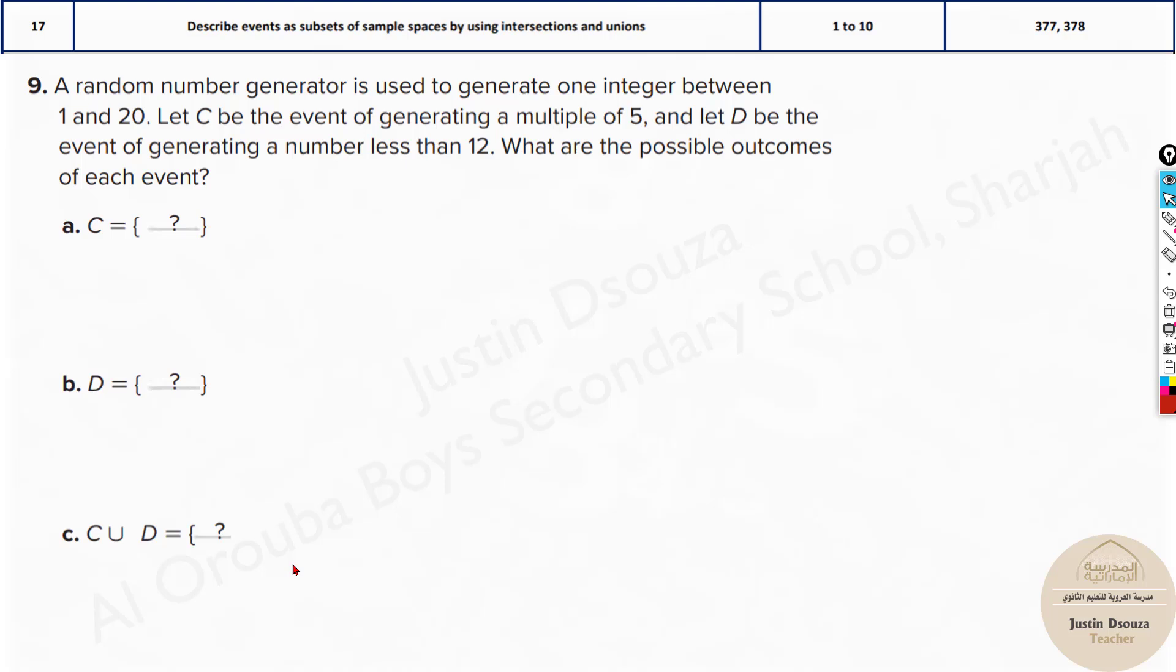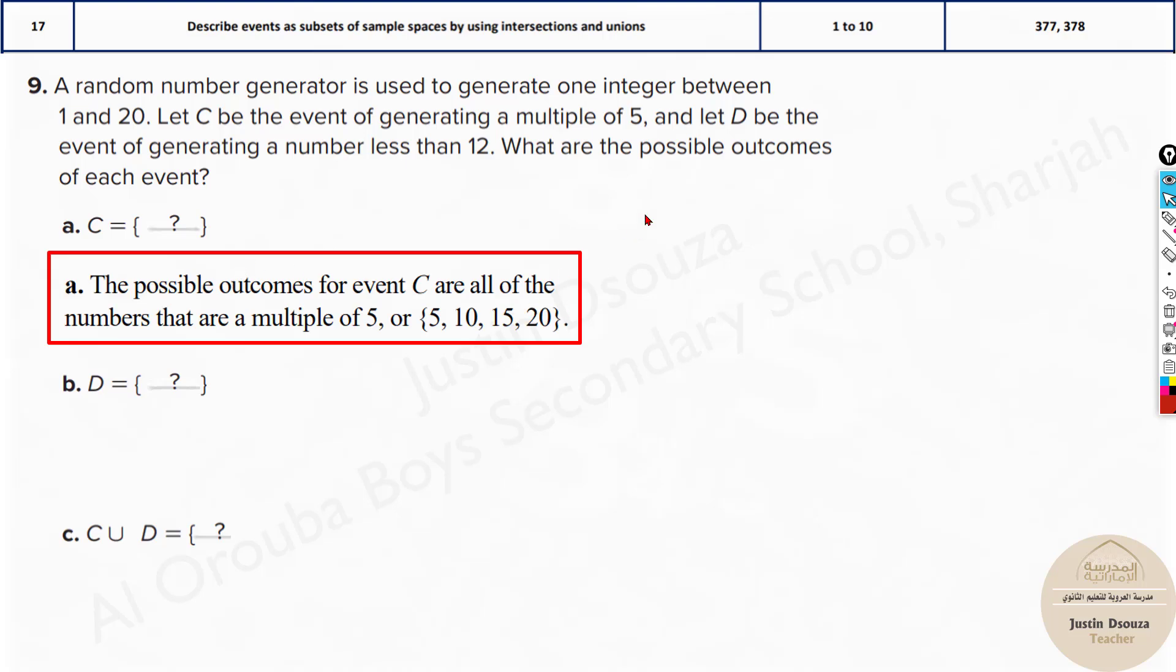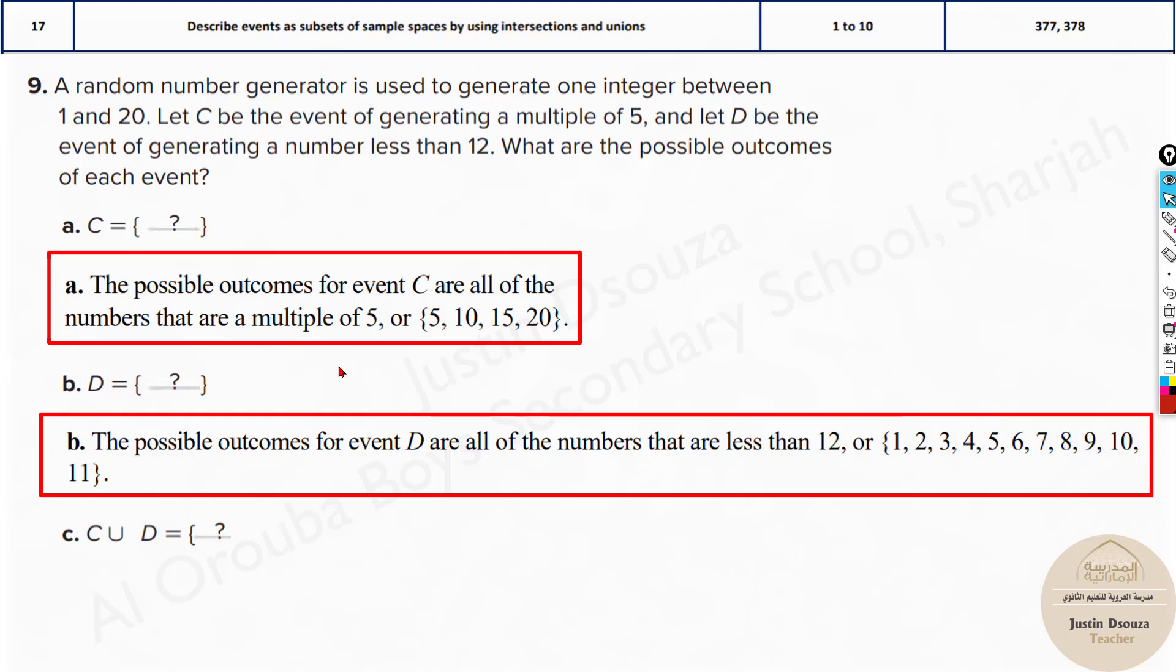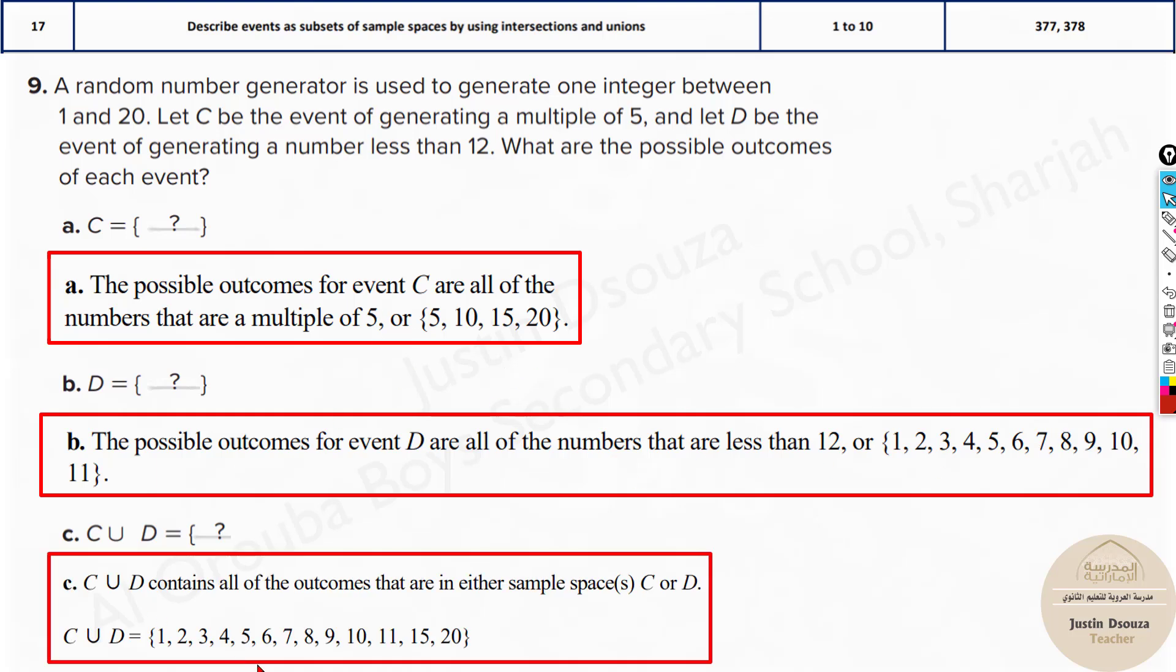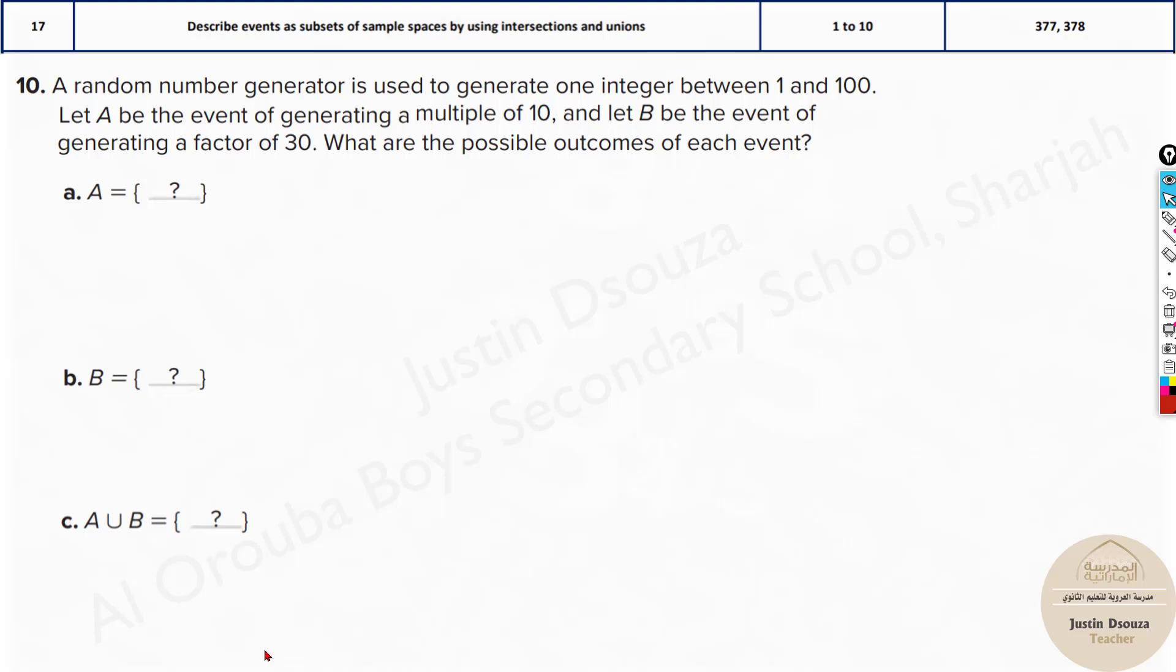Over here, a random number generator is used to generate one integer between 1 and 20. Let C be the event of a generator generating a multiple of 5. Multiple of 5 within 1 to 20. The numbers are generated randomly from 1 to 20 only. Now we need this set to be a multiple of 5. It's either 5, 10, 15, 20. These are the possibilities. Now D be the event generating a number less than 12. So it can be anything until 12. So 1 to 11. And what is the union of these both events? It would be 1 to 11. And then we have 15 and 20. Just write all the numbers. If they are repeated, only write it once.